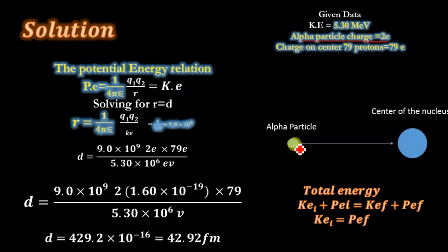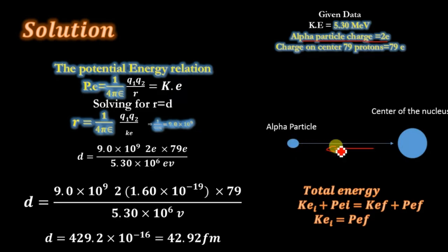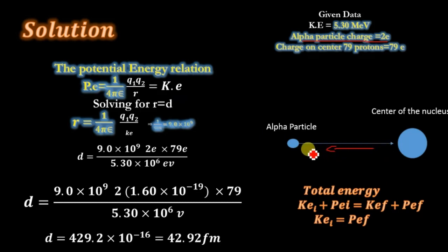According to Coulomb's law, the same charges always repel each other. When this alpha particle approaches toward the nucleus, the nucleus will repel the alpha particle in the opposite direction. As the alpha particle approaches the nucleus, its speed will decrease and eventually it will come to rest. Its speed gradually decreases and finally it will stop, then start traveling back in the opposite direction.